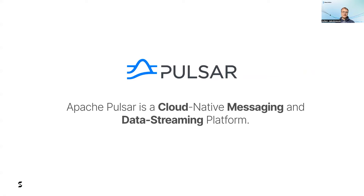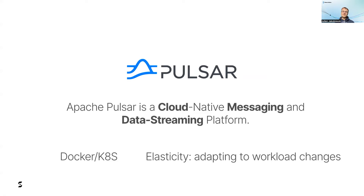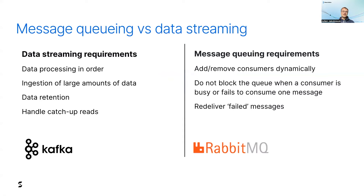What is Apache Pulsar? Apache Pulsar is a cloud-native messaging and data streaming platform. Cloud-native means that Pulsar is designed for running in containerized environments and is designed to scale out, to scale horizontally. But it's not only about scalability but also about elasticity. Elasticity is about adapting to workload changes, and Pulsar is both a messaging and a data streaming platform. Data streaming and messaging require a different set of features, which is why you end up with data streaming platforms such as Kafka on one side and message brokers such as RabbitMQ on the other side.